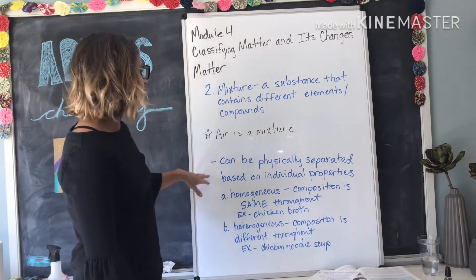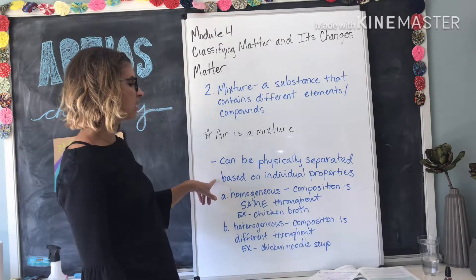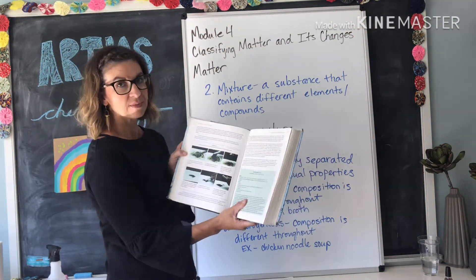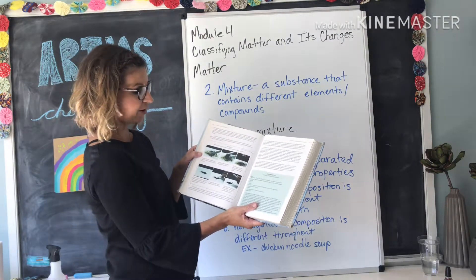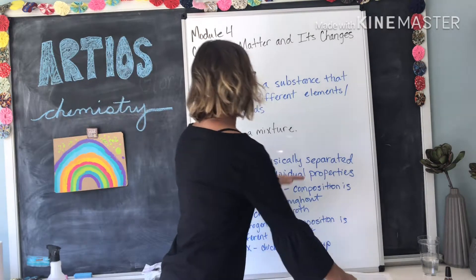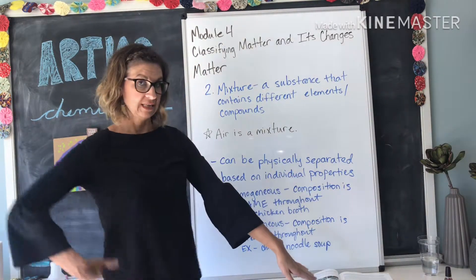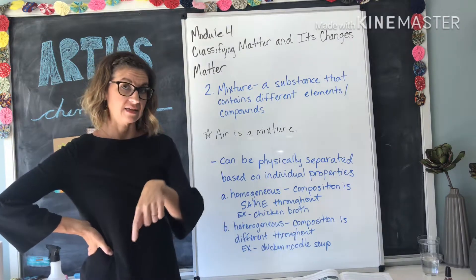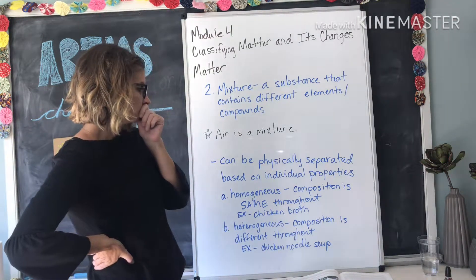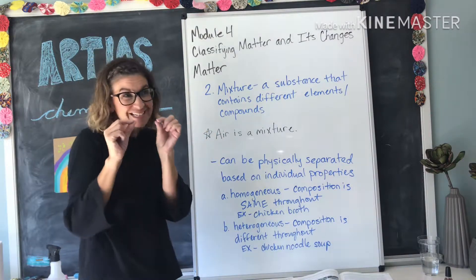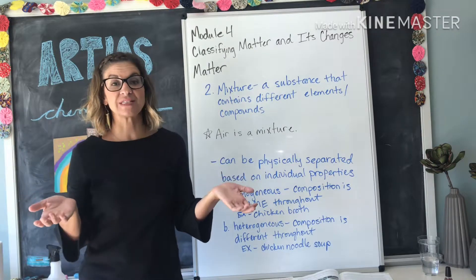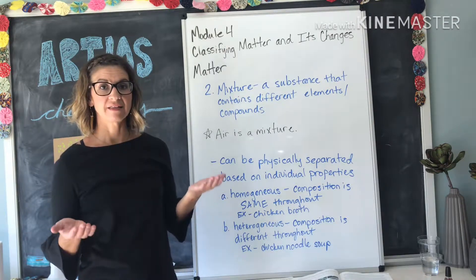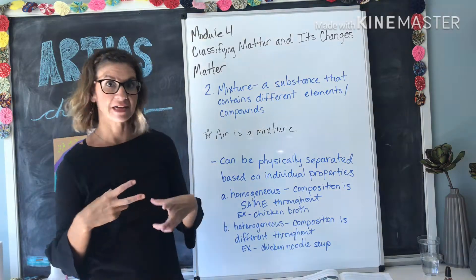Mixtures can be physically separated based on their individual properties. Back to the book — the sulfur and iron mixture is not a pure substance. The two could be physically separated based on individual properties. The book shows a magnet separating the two because iron is magnetic and sulfur is not. It could also be separated based on its color because you can still see that the sulfur is yellow and the iron is black. So the two are maintaining their separate identities — they're just mixed together, making it a mixture.